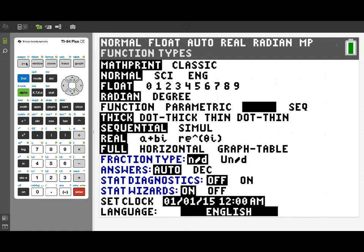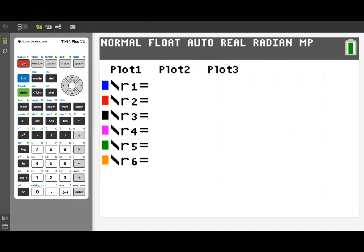Once you've entered polar, when you return to the y equals menu, you'll now see plot slots for r1, r2, and so on. These will be expected to be expressions in terms of the angle theta.